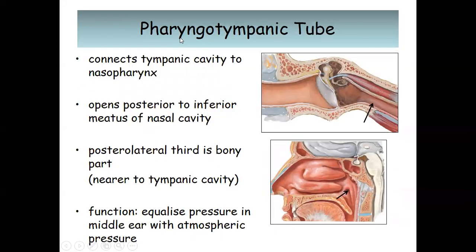The pharyngotympanic (Eustachian) tube connects the tympanic cavity to the nasopharynx. It opens posterior to the inferior meatus of the nasal cavity. The posterior lateral third is bony and is nearer to the tympanic cavity. The function of the pharyngotympanic tube is to equalize the pressure in the middle ear with atmospheric pressure.